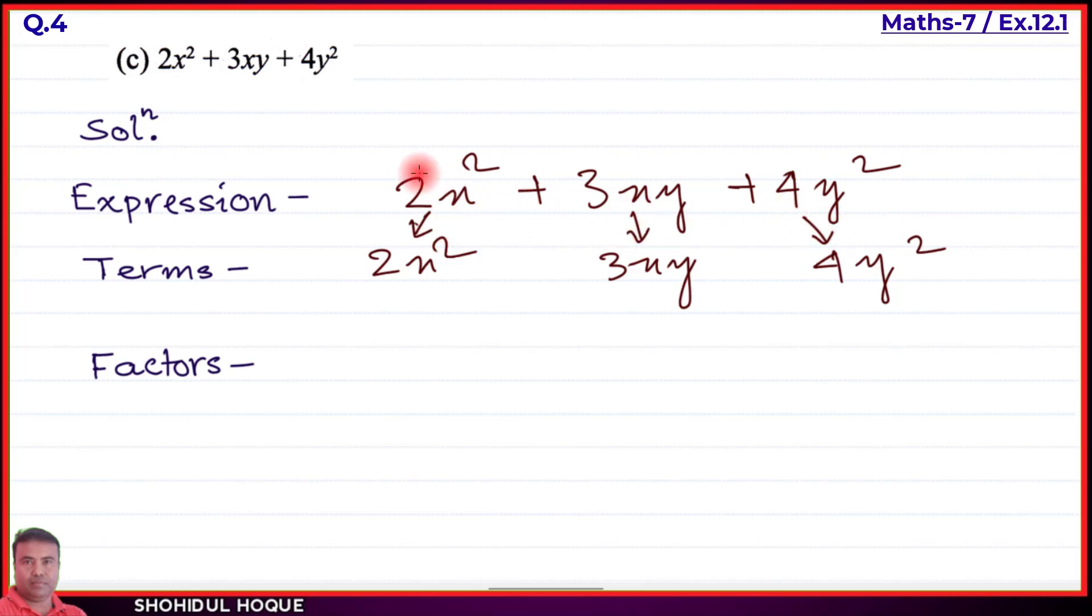Using the tree method, the expression branches into three terms. For the first term 2x², the factors are 2, x, and x.